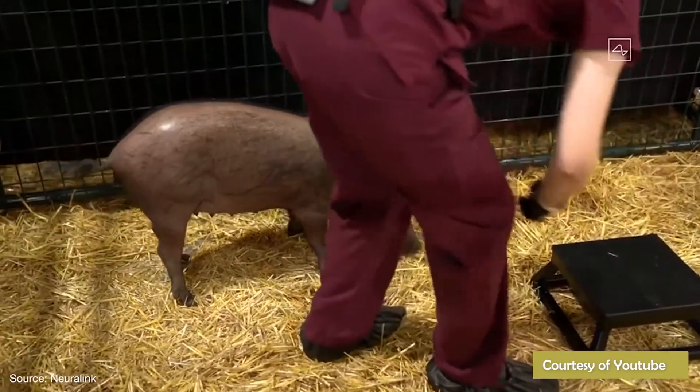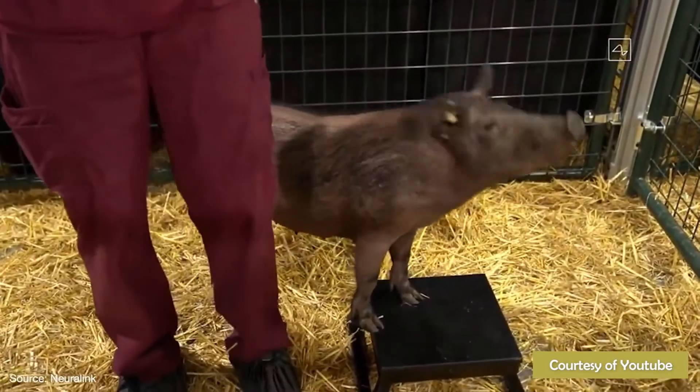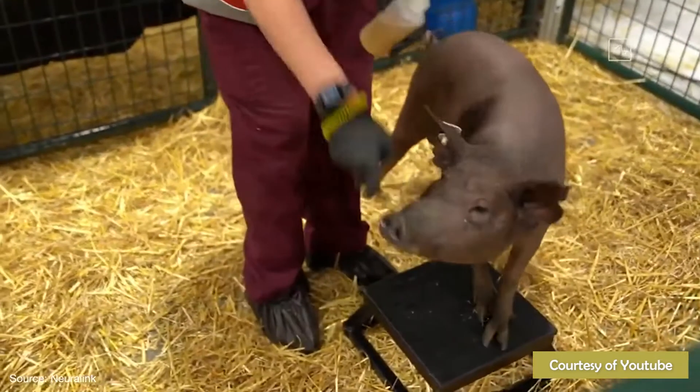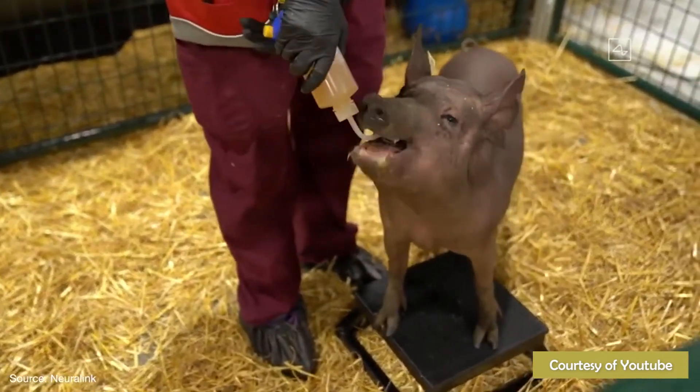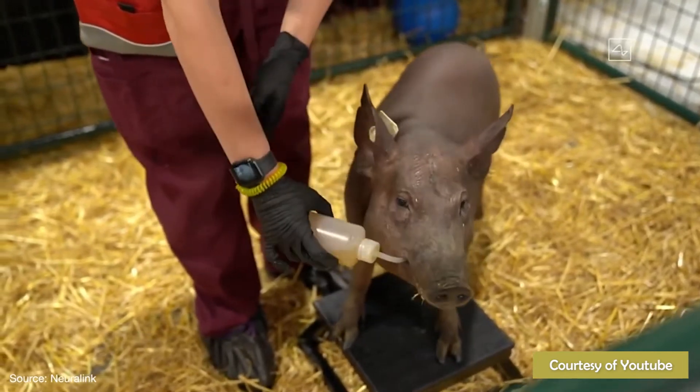Friday's live-streamed YouTube demonstration was on a pig named Gertrude, who Musk said had a brain chip implanted two months earlier, where the chip was used to broadcast the animal's neural activity in real time as it waddled around a pen. Having received a breakthrough device designation from the FDA in July, Neuralink is on track for human trials by next year.